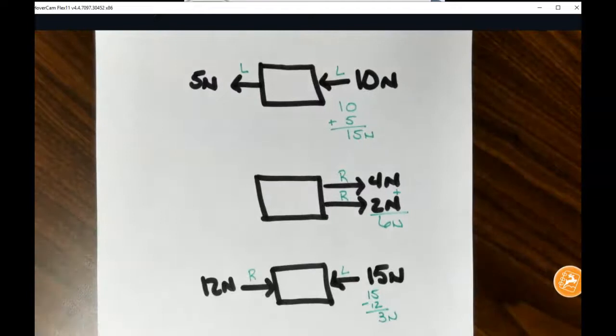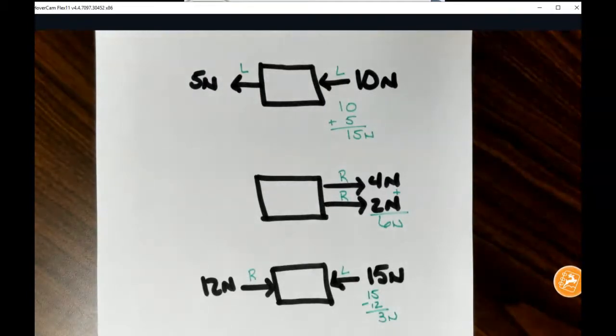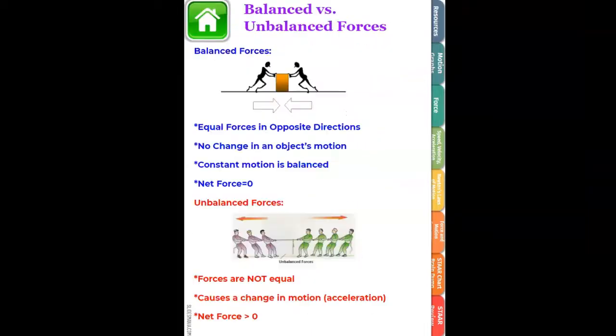Now, why is it important to determine the net force? Well, there are two other terms that we also have to look at: balanced and unbalanced forces. Balanced forces mean that the net force is zero. It only happens if forces are working in opposite directions and they are equal in size. The result of this is there's no change in an object's motion. So an object that is not moving will not move.